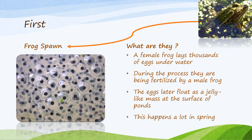First: frog spawn. What are they? A female frog lays thousands of eggs underwater. During the process, they are fertilized by a male frog. The eggs later float as a jelly-like mass at the surface of ponds.